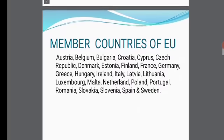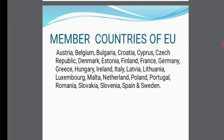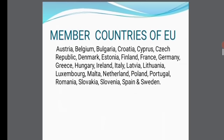There are 27 member countries in the European Union. They are: Austria, Belgium, Bulgaria, Croatia, Cyprus, Dutch Republic, Denmark, Estonia, Finland, France, Germany, Greece, Hungary, Ireland, Italy, Latvia, Lithuania, Luxembourg, Malta, Netherlands, Poland, Portugal, Romania, Slovenia, Spain, and Sweden. Try to locate these countries on the outline map of Europe.